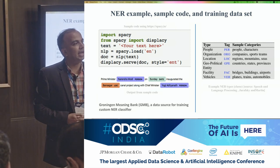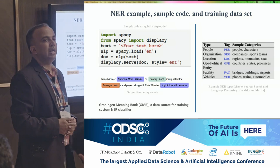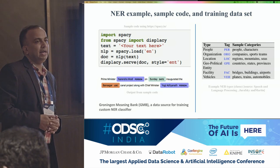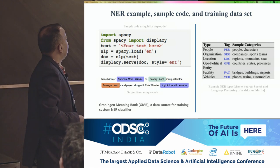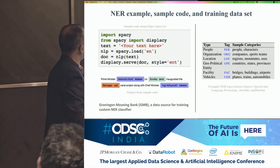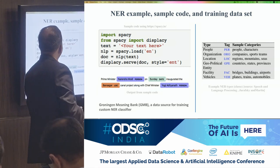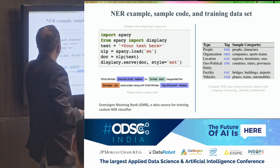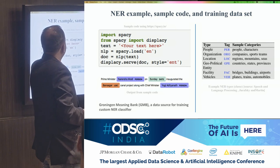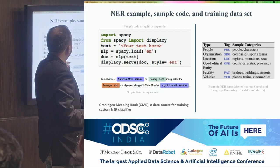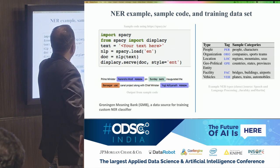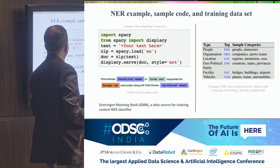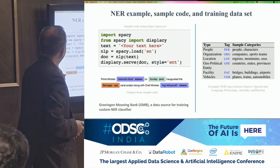spaCy, NLTK, and Stanford NLP do a good job of named entity recognition. I've shown code from spaCy to do named entity recognition — just five lines of code — and it will show you in a nice manner that Narendra Modi is a person, Sunday is a date, Bansagar is a location, and Yogi Adityanath is a person.